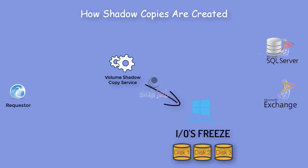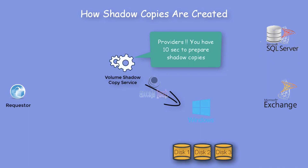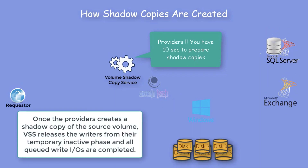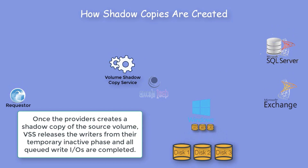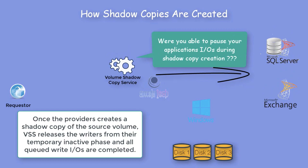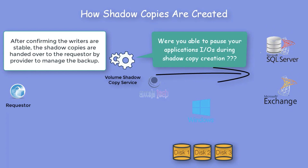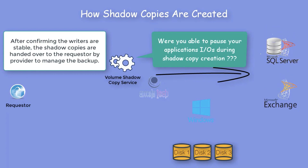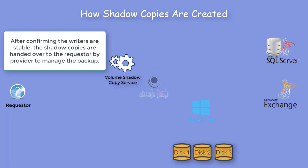At the same time, VSS tells the Provider that it has just 10 seconds to prepare for the shadow copies. Once the Provider creates a shadow copy of the source volume, VSS releases the Writers from their temporary inactive phase and all queued write I/Os are completed. VSS then does a quick check to ensure application I/Os were paused during shadow copy creation. After confirming the Writers are in a stable state, the shadow copies are handed over to the Requester by the Provider to manage the backups.